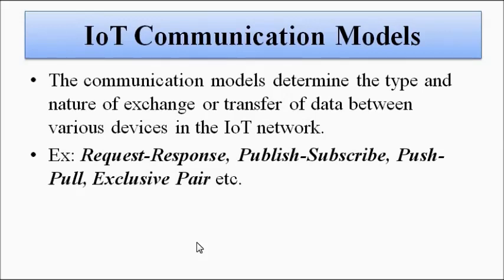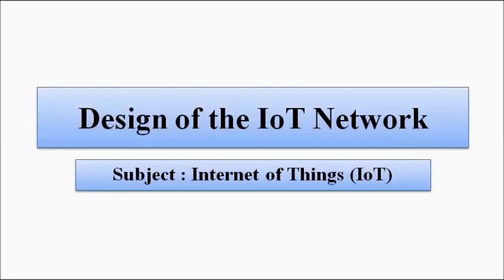The request-response and exclusive pair models are similar to online search engines, involving two parties — a client and a server. When we search for something, we are requesting information; the server gathers all related information and returns links and pages to our screen. That is the request-response model. These are the commonly used communication models, and we'll discuss them in detail in separate videos.